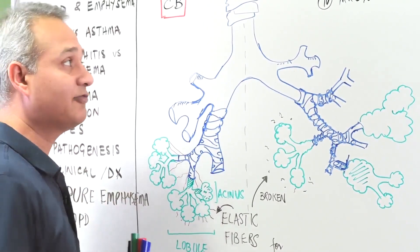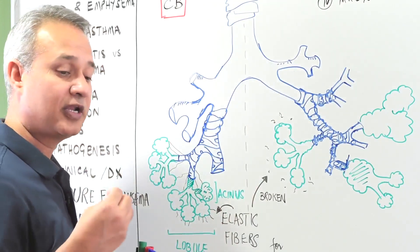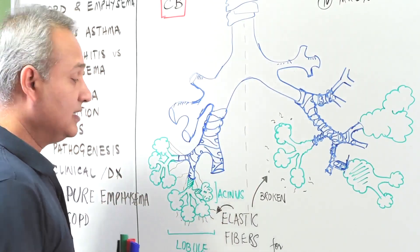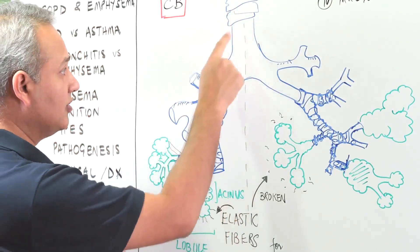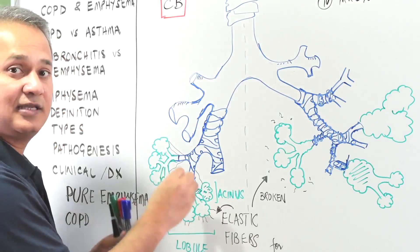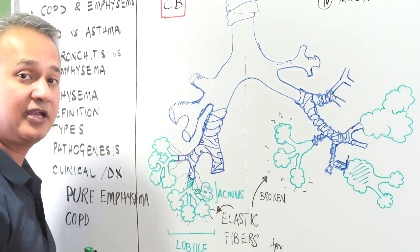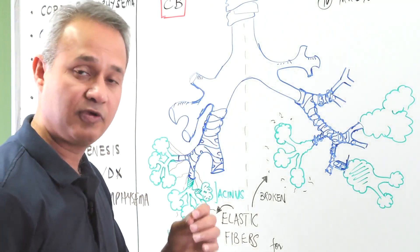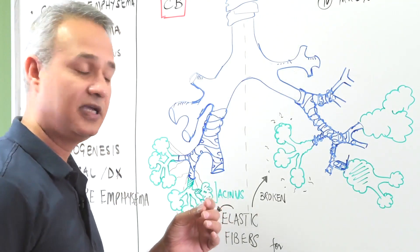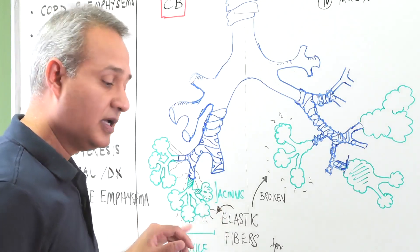The causative factor is the same. The most common causative factor is smoke - smokers or people in polluted areas. The same smoke attacks both parts of the tree and causes similar damage. However, when the damage is to the respiratory airway, we call it chronic bronchitis. And when it is to the acini, we call it emphysema.